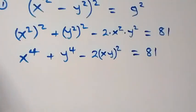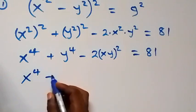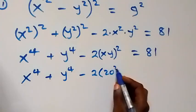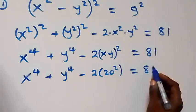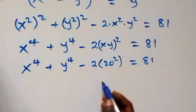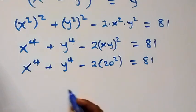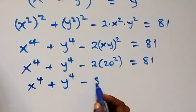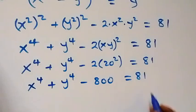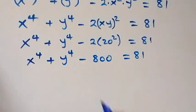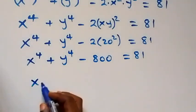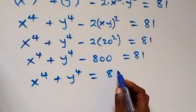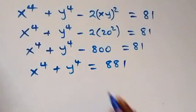Substituting xy = 20, this becomes x to the power 4 plus y to the power 4 minus 2 times 20 squared. Since 20 squared is 400, that gives us 800. So x to the power 4 plus y to the power 4 minus 800 equals 81, which means x to the power 4 plus y to the power 4 equals 881.